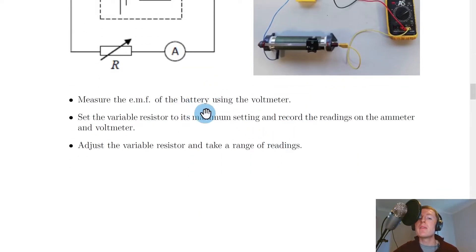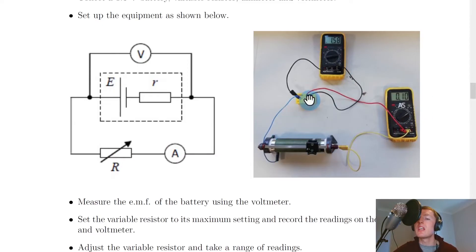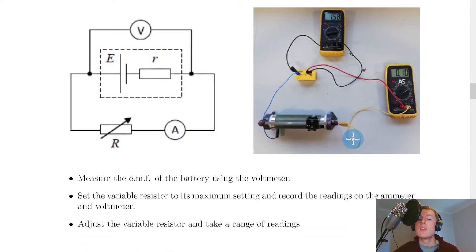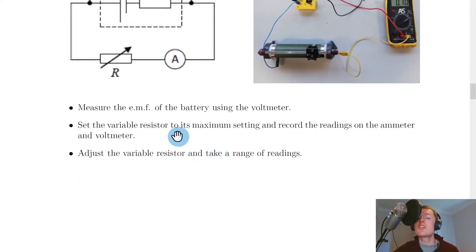It then says to measure the EMF of the battery using the voltmeter. So initially you want to find where the EMF of the battery is without anything else connected into the battery. You just want to measure the voltage across the battery without a current flowing. And then what you want to do is set the variable resistor to its maximum setting and record the readings on the ammeter and voltmeter. So that will give you your initial set of readings and then you want to adjust the variable resistor and take a range of readings.